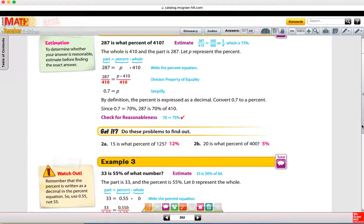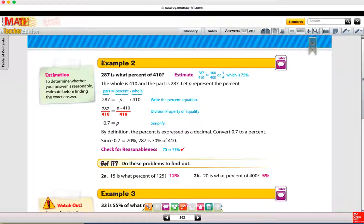For example 2, we have the part, 287, given to us, and we have the whole, in this case 410. In example 2, we're trying to find the percent. So notice how they set this up: 287 is, the word 'is' is the equal sign. And then what percent, when we don't know something in algebra we use a variable. And then 'of' is multiplication, and then 410. We're just translating everything from words to symbols.